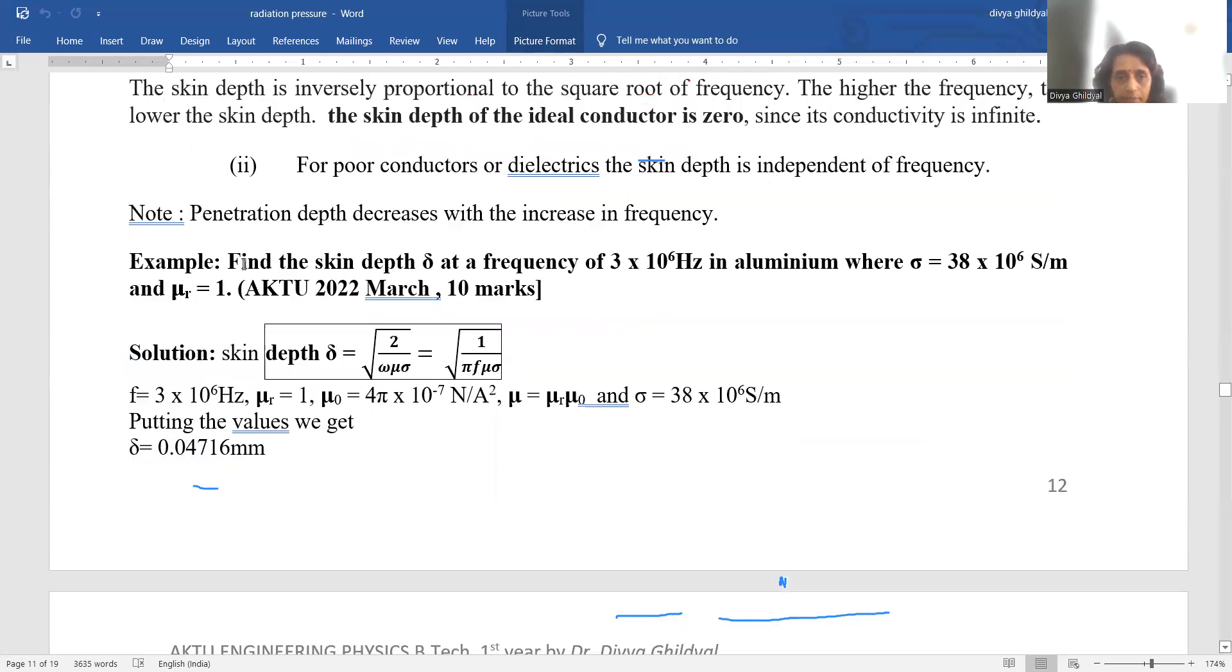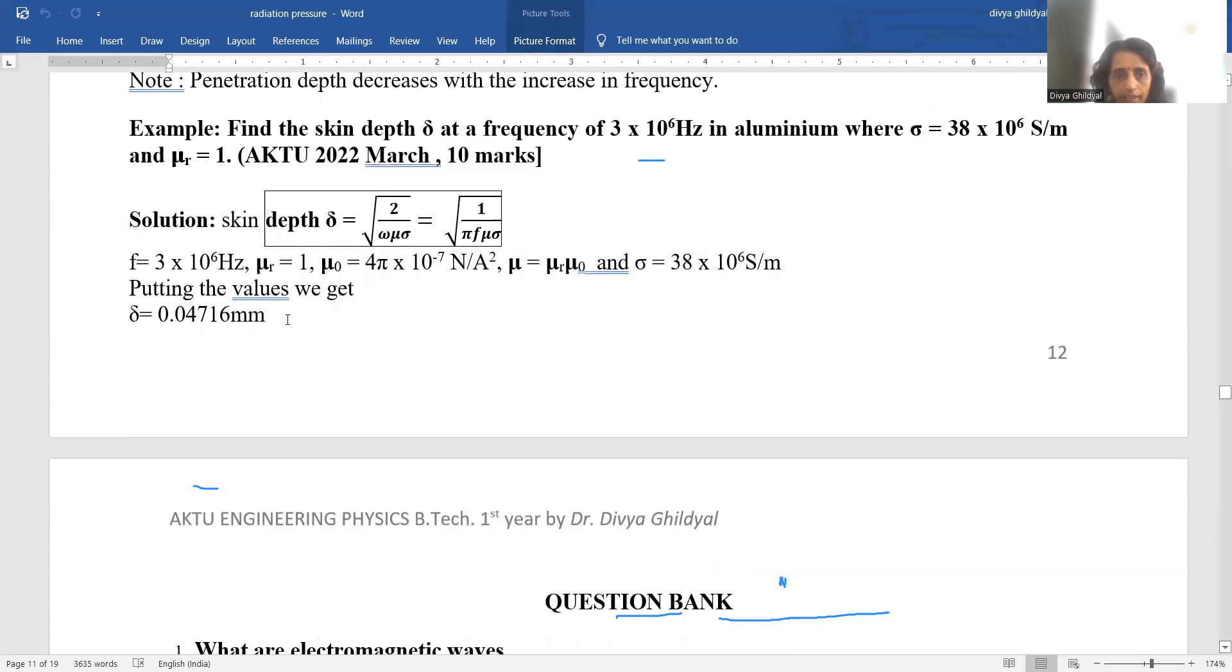Now this numerical has been asked in your AKTU 2022 March paper, 10 mark numerical. Find the skin depth at a frequency of 3 into 10 to the power of 6 hertz in aluminium where sigma is equal to 38 into 10 to the power of 6 and mu r is equal to 1. So we use this formula of skin depth, put the mathematical values and we get the answer for the same.